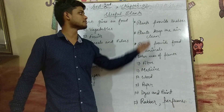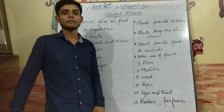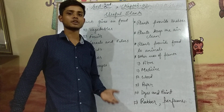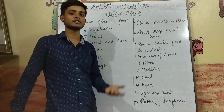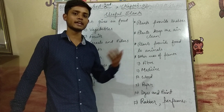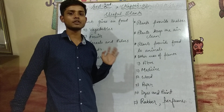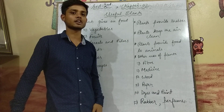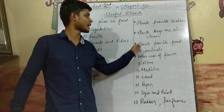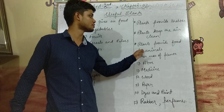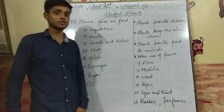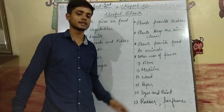Plants keep the air clean. Plants absorb carbon dioxide from the atmosphere and release oxygen, which we breathe. Plants also provide food to animals.